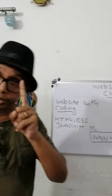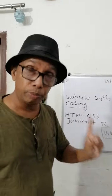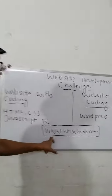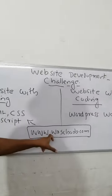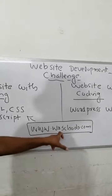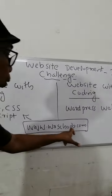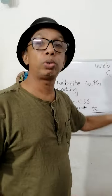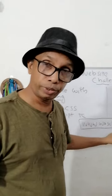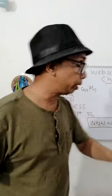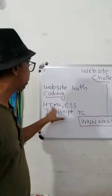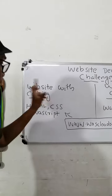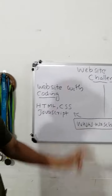You can study coding by using the website www.w3schools.com. Please go to this website and you can study these three languages: HTML, CSS, and JavaScript.